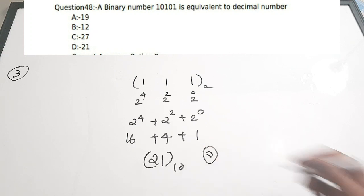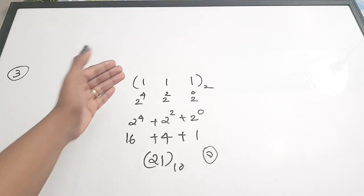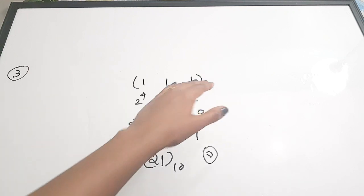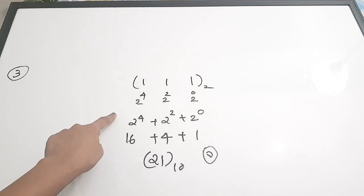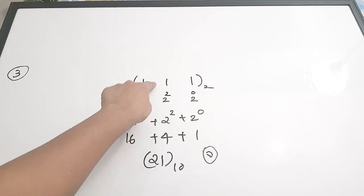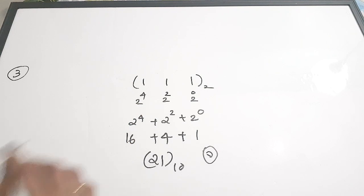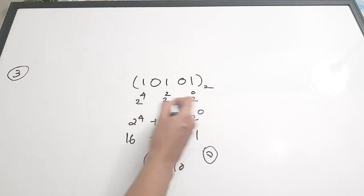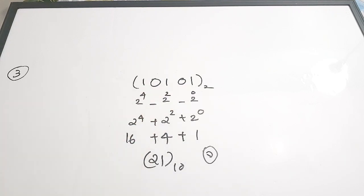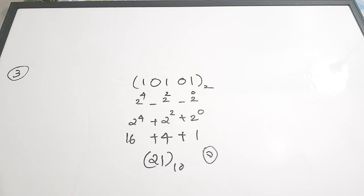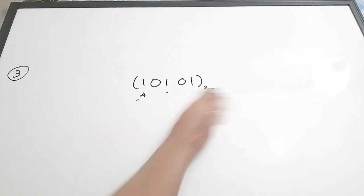To summarize the binary-to-decimal conversion procedure: write the position values, take them as powers of 2, ignore positions with a 0 above them, and add the remaining values. This is a very simple procedure. The answer here is option D.